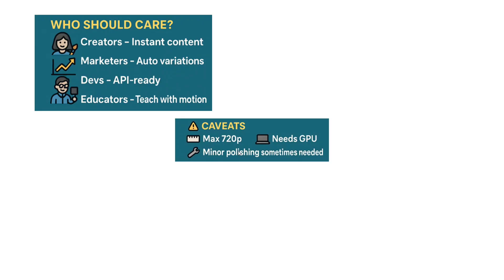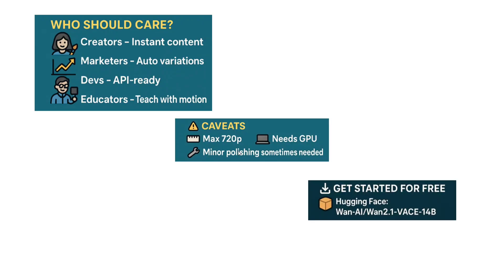The caveats are that it requires a GPU and minor polishing is needed, but these are ignorable for now. The model is available on Hugging Face and the code is on GitHub — Wan 2.1 Waise 14B. There's no Hugging Face Space yet, but that should be coming soon. So what are you waiting for? Go try out Waise right now and see how video editing can be done using AI.